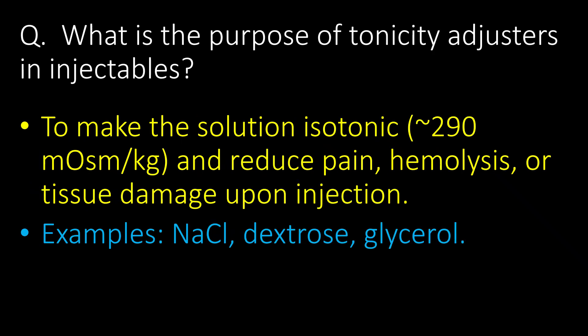What is the purpose of tonicity adjusters in injectables? Tonicity adjusters are used to make the solution isotonic — approximately 290 mOsmol per kg — and to reduce pain, hemolysis, and tissue damage upon injection. Examples of tonicity adjusters are NaCl, dextrose, and glycerol.